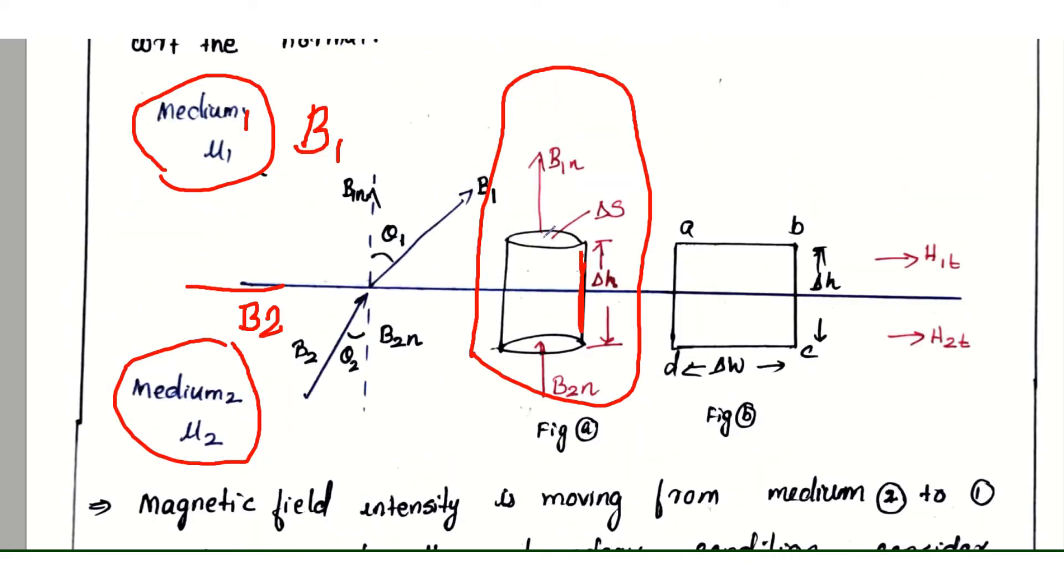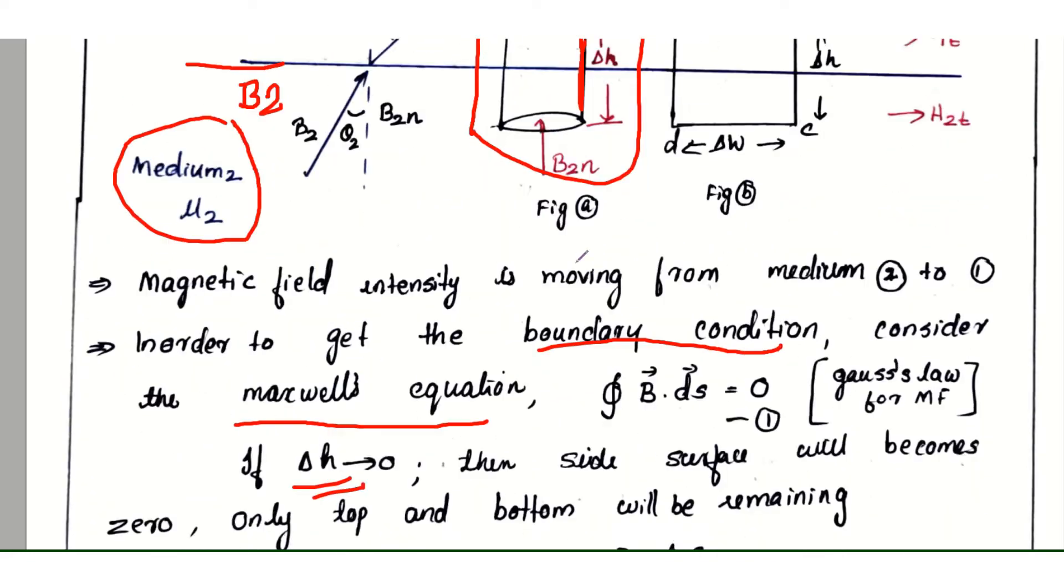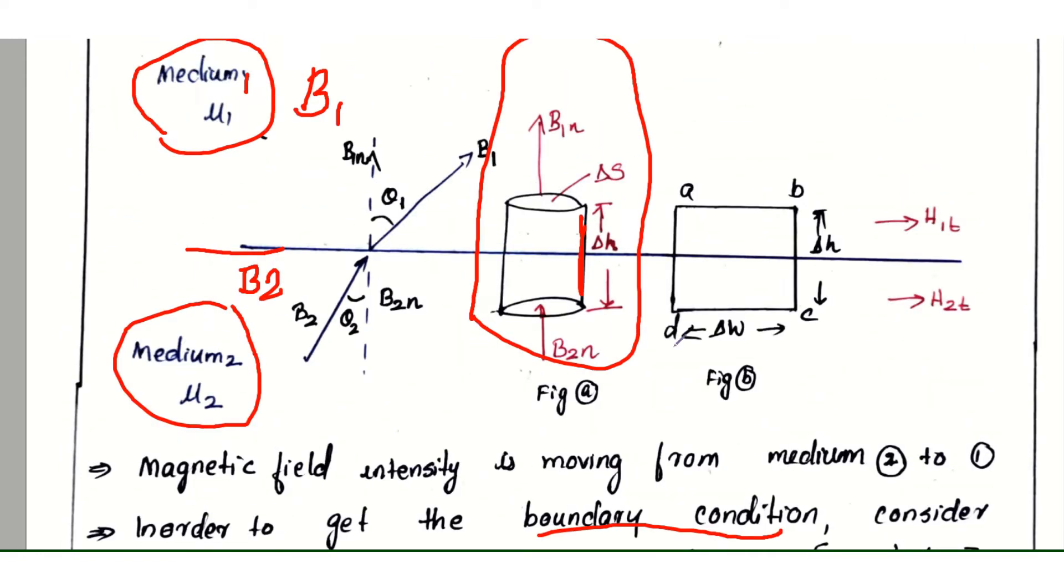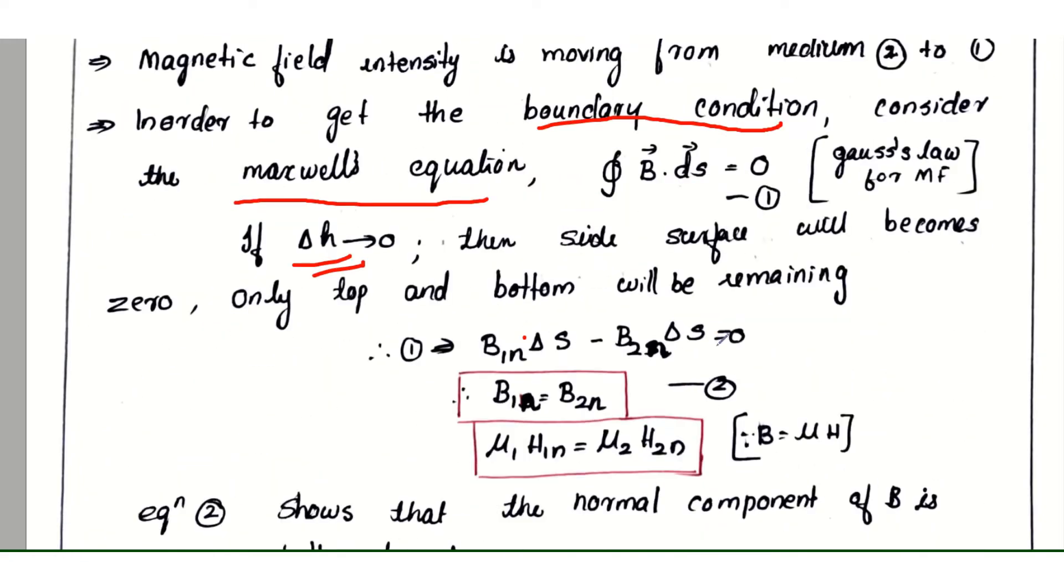That is B₁ₙ · ΔS - B₂ₙ · ΔS = 0. Applying boundary conditions, Δh cancels out. Therefore, B₁ₙ = B₂ₙ. This is equation 2.